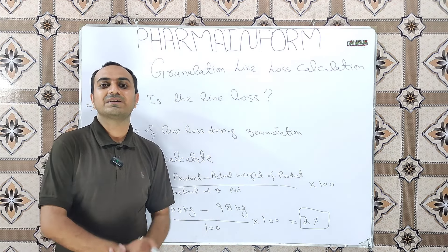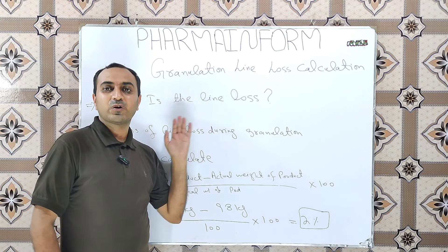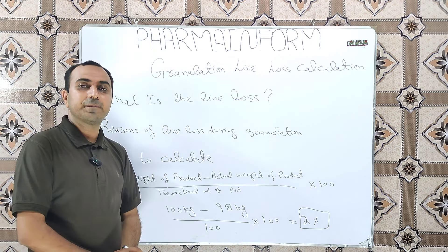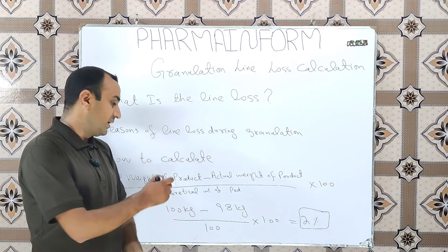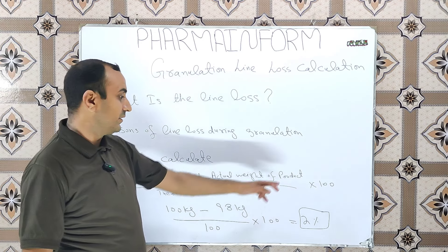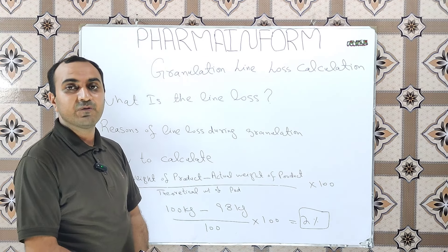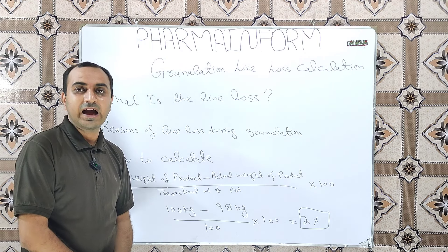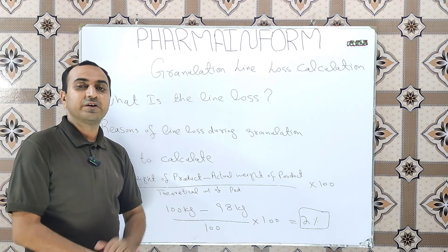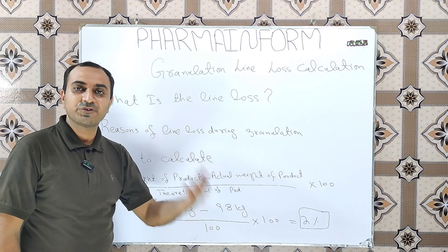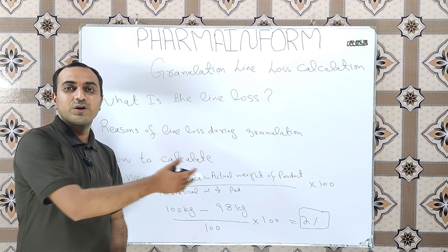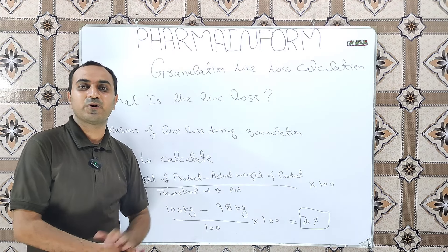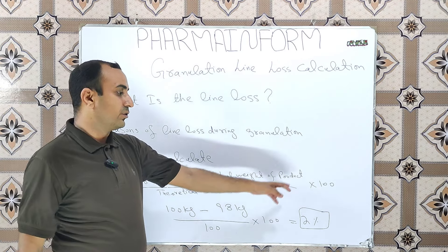Now we will learn how to calculate the granulation line loss. The formula is: (Theoretical weight of product − Actual weight of product) ÷ Theoretical weight of product × 100. In other words: (Weight of product before granulation − Weight of product after granulation) ÷ Weight of product before granulation × 100.